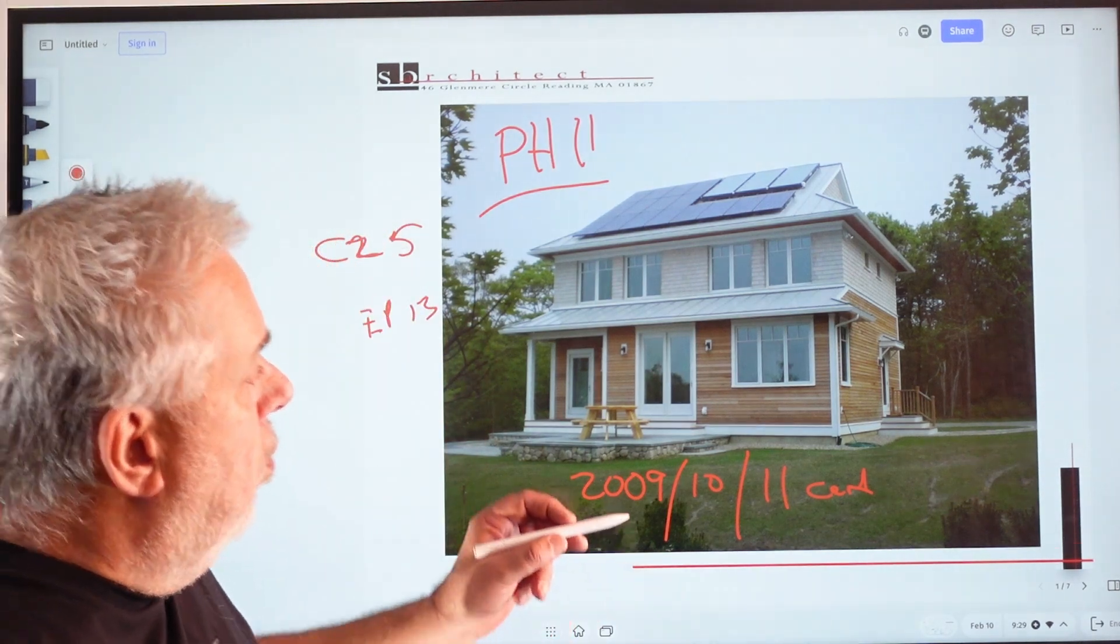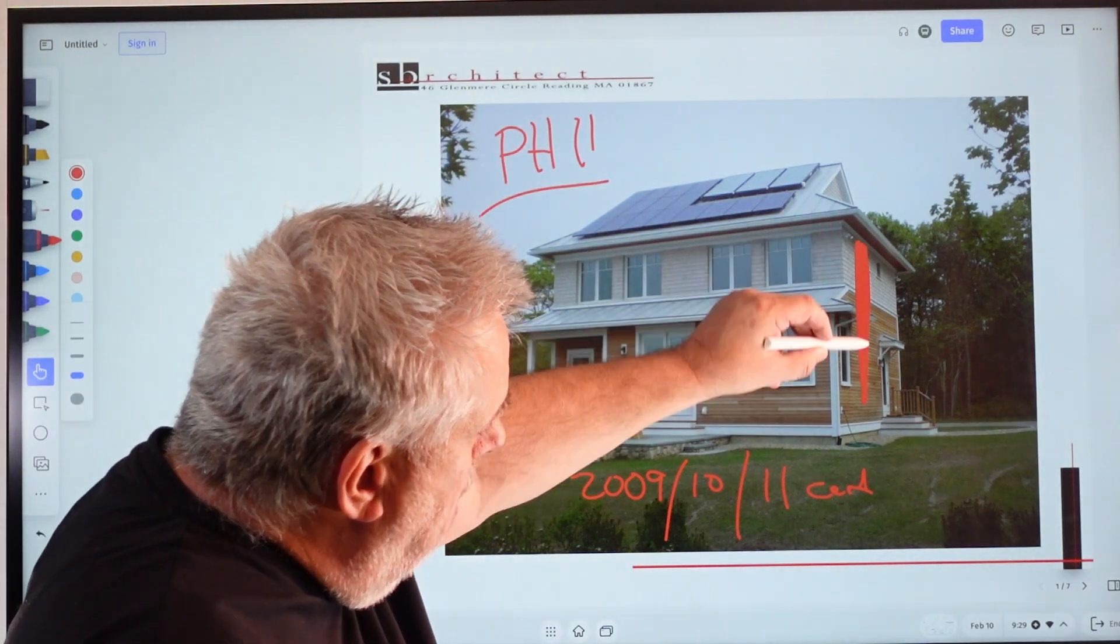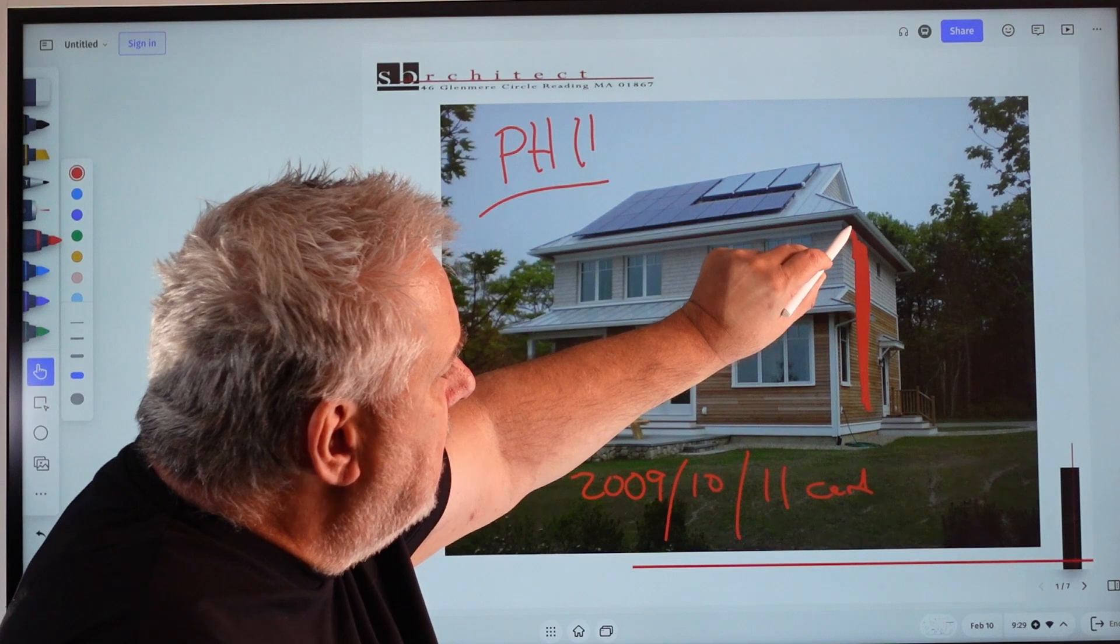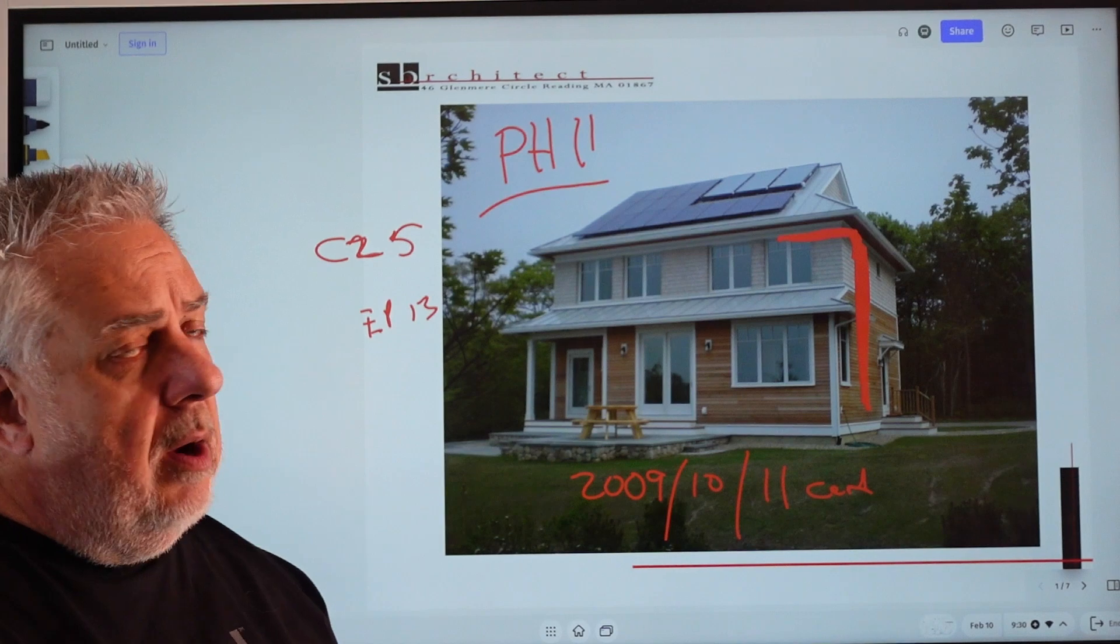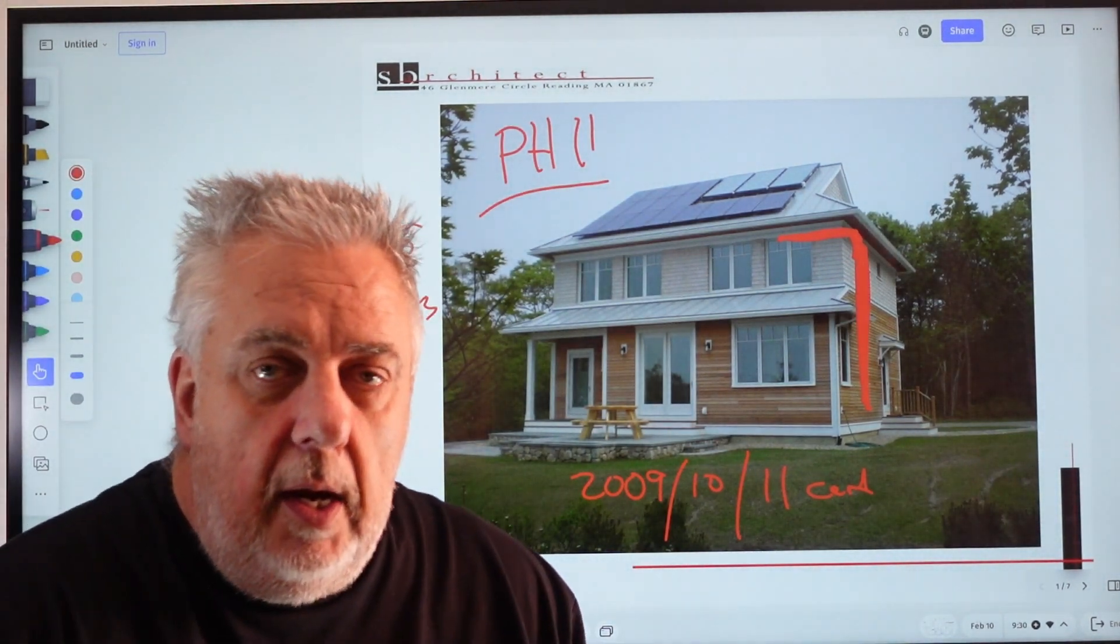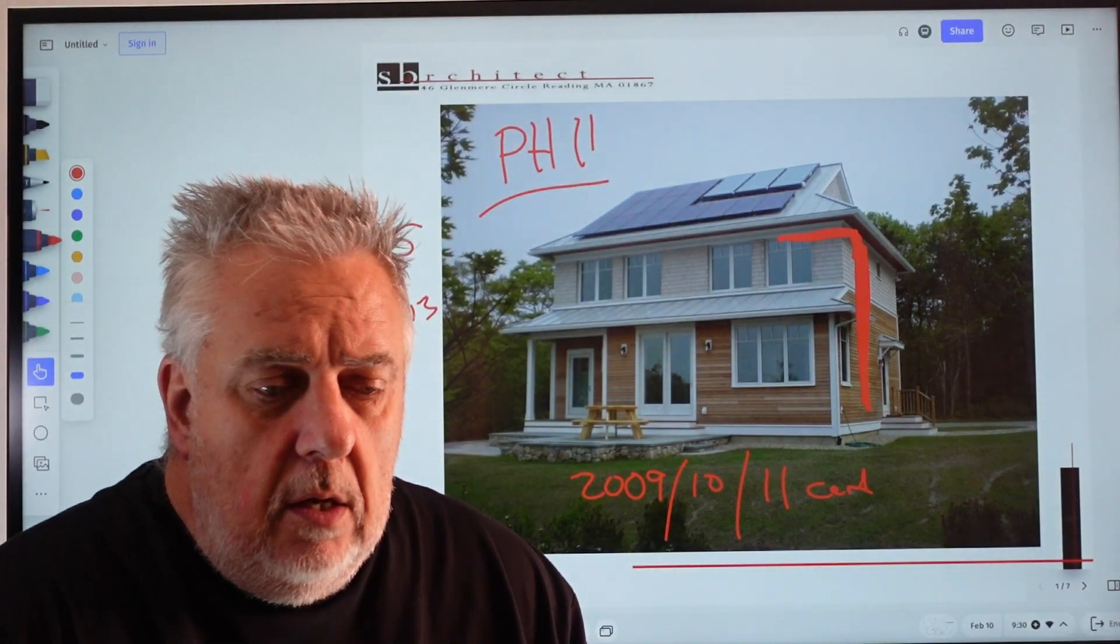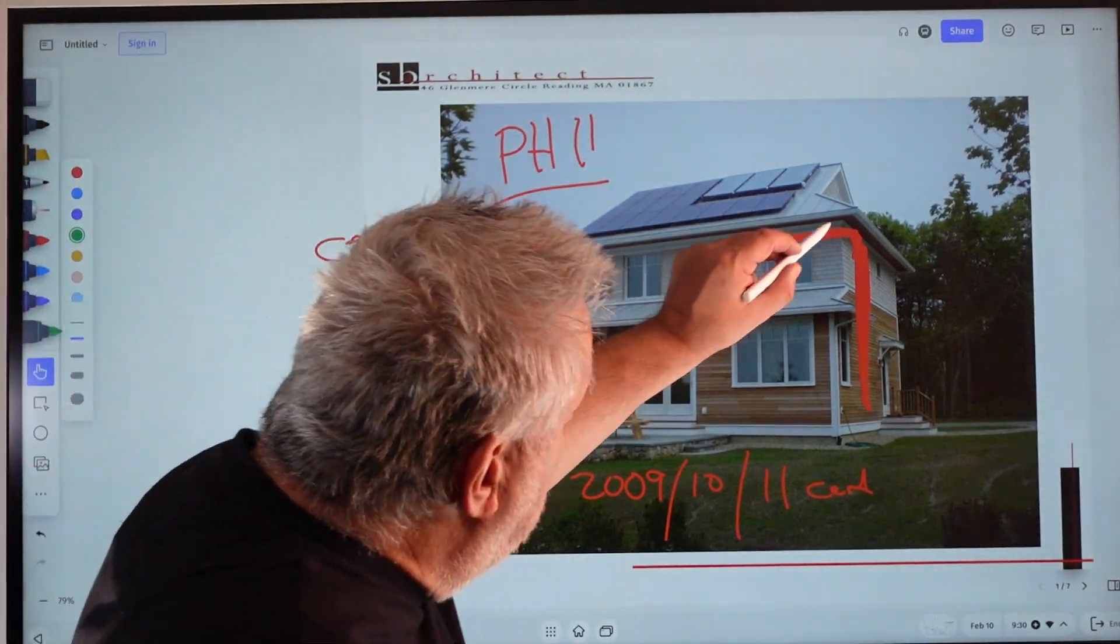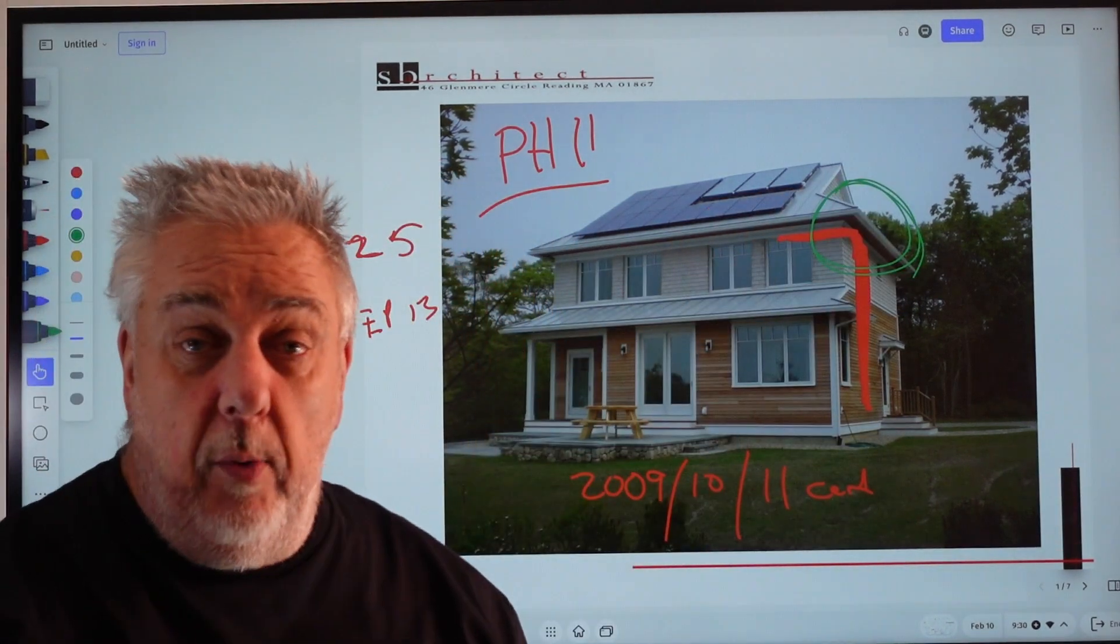But today we're going to talk about - we have our zip sheathing on the wall and that's our primary air barrier. If you watch the last video, we go up and we use the ceiling drywall as our ceiling air barrier, or the sixth side of the box. And the question then becomes, how do I solve for that?